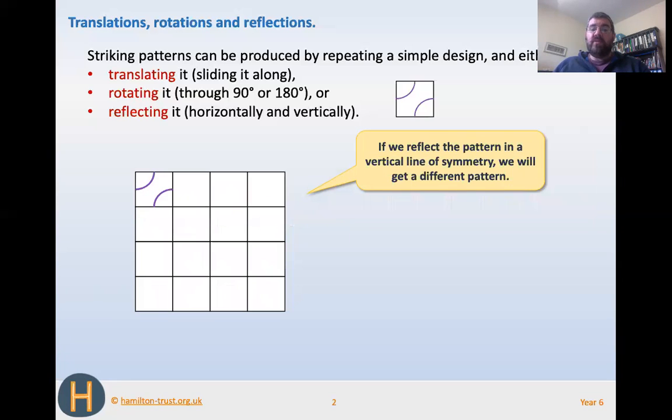There's also, though, we can reflect the pattern. And so, in this one, it says here, we're going to reflect it in a vertical line of symmetry. So, this is the vertical here, up and down. So, we're going to reflect this across. Can you have a think right now, as you look at it, what's it going to look like when I reflect it across? Shall we see?